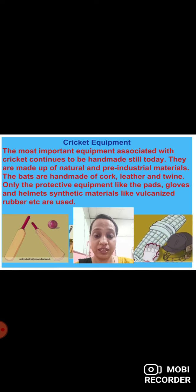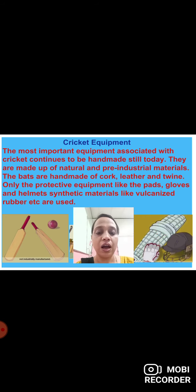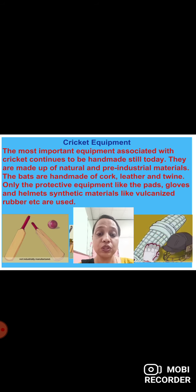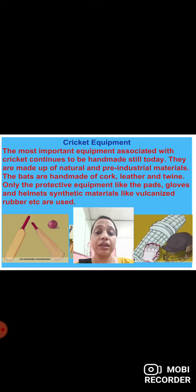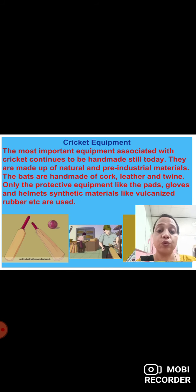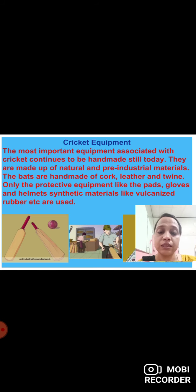Now let's know about the equipment. The most important equipment associated with cricket continues to be handmade even today — it is all pre-industrial material. The bats are handmade of cork, leather and twine. Only the protective equipment like the pads, gloves and helmets consist of synthetic materials like vulcanized rubber.